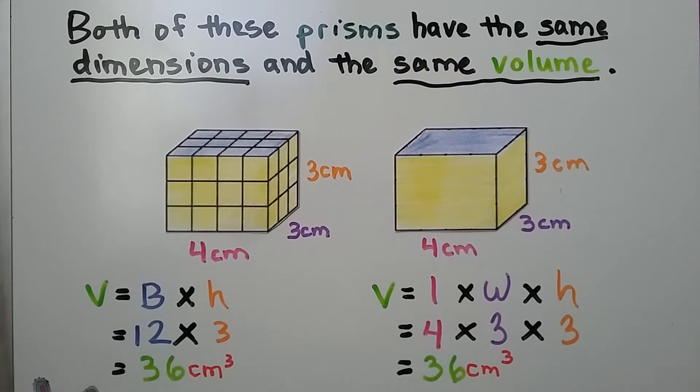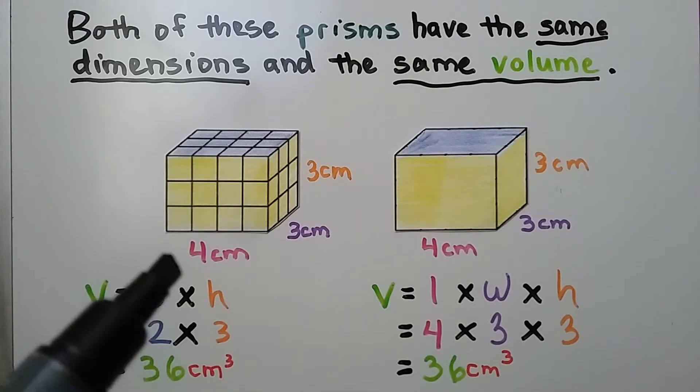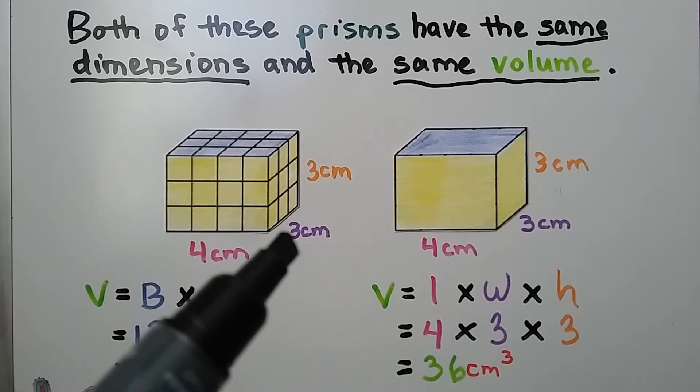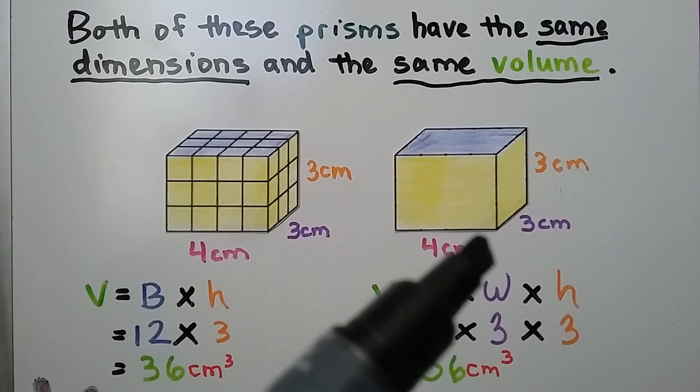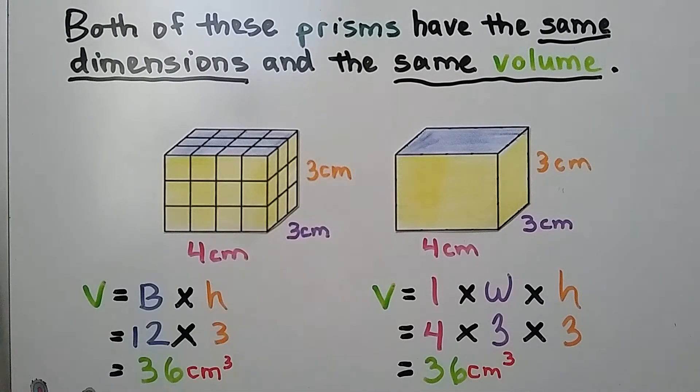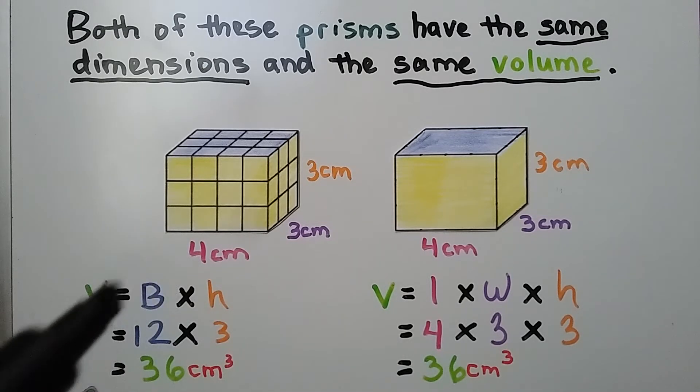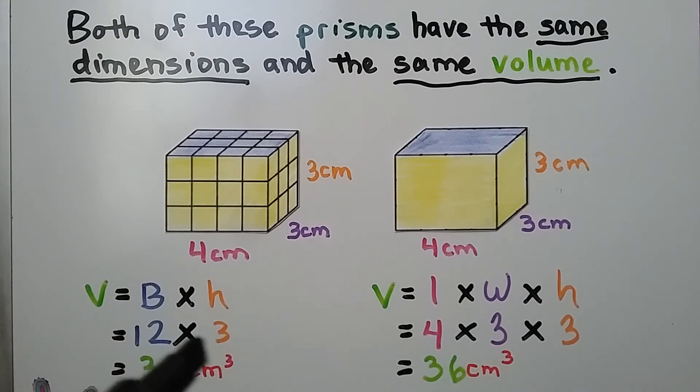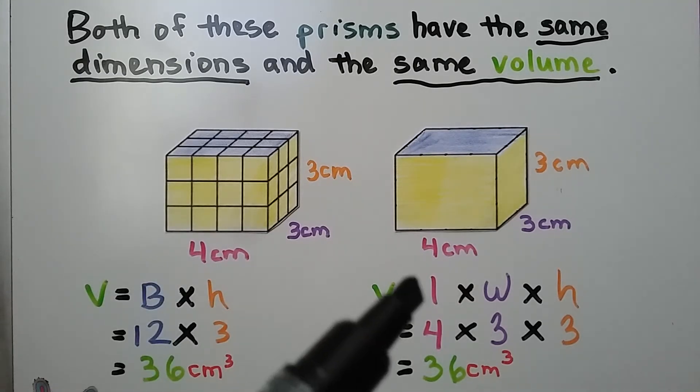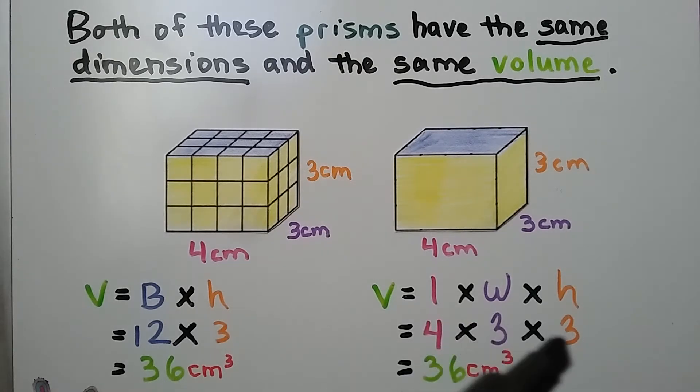Both of these prisms have the same dimensions and the same volume. We've got a length of 4 and a width of 3. This one also has a length of 4 and a width of 3. And they both have a height of 3 centimeters. We can do 4 times 3 is 12 for the base. Multiply that by the height, and we find that it's 36 centimeters cubed, or cubic centimeters. We can also do 4 times 3 times 3 and get 36 cubic centimeters.